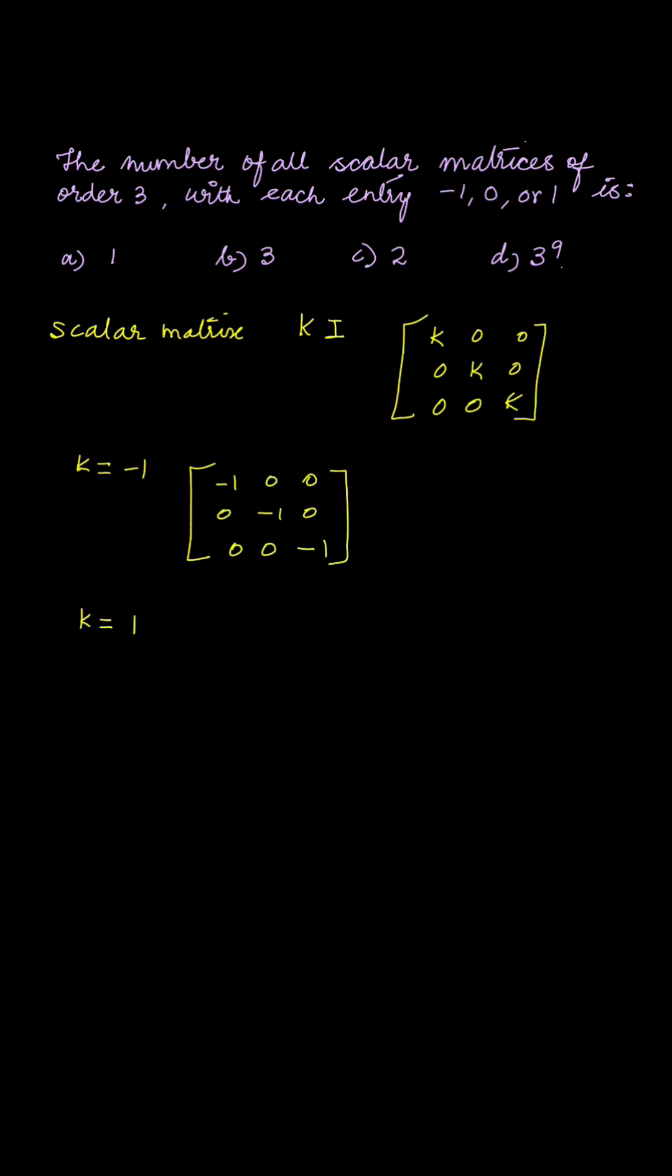If k is equal to 1, the diagonal elements are all 1 and the rest of the elements are 0. If you look at this matrix, it is an identity matrix. So, the identity matrix is also a scalar matrix in which the k value is 1.